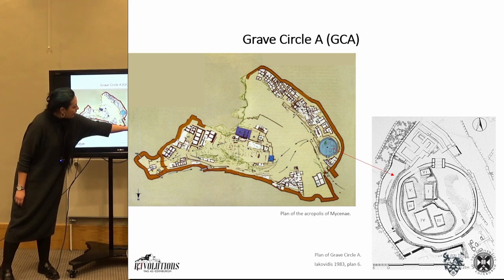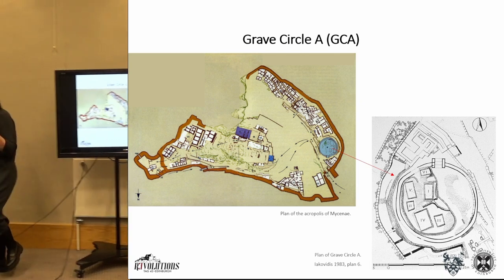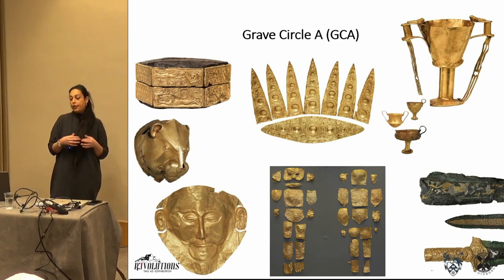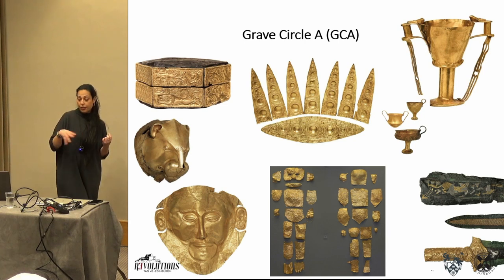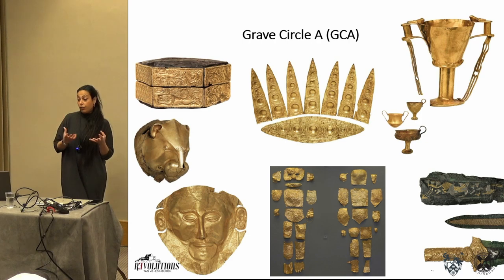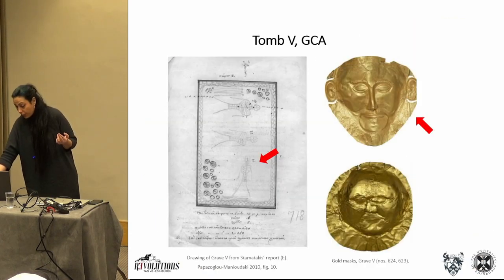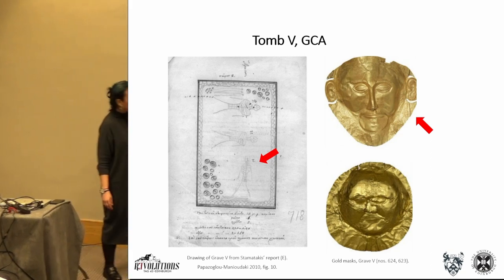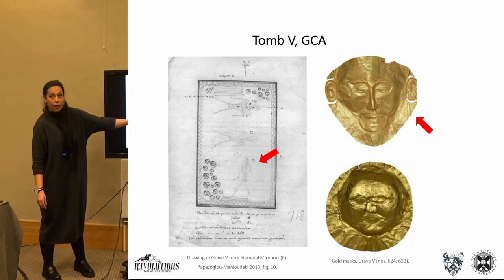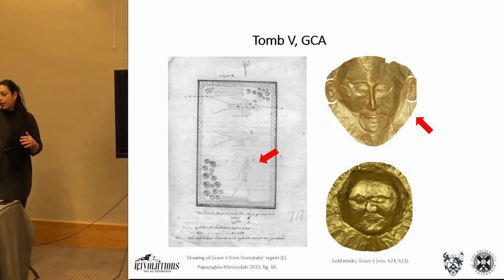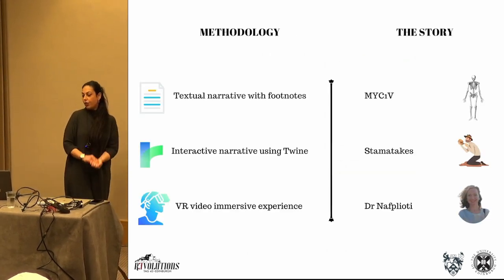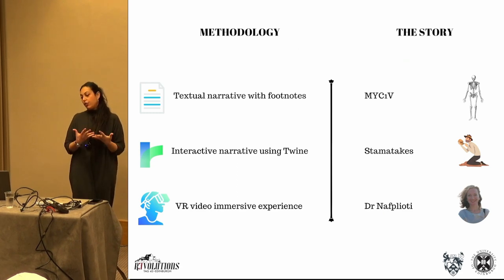A closer look at Grave Circle A: there were six graves. My case study is Grave Number Five. These people were very richly furnished — Mycenaeans were — and they were buried with a lot of gold. The famous so-called Agamemnon's Mask was essentially on the face of individual MYC15, marked here with the letter tau. He had changed a lot of code names, which is part of the story, by the way.